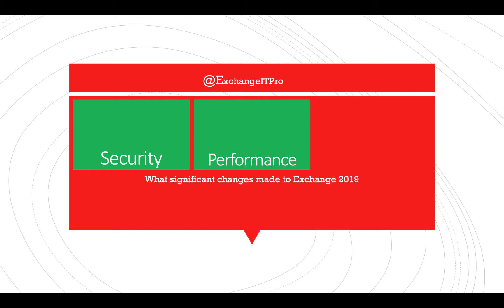Exchange 2019 also leverages Bing technology for search, offering much better search compared to previous versions. Database failover has been taken to the next level — your indexing now goes with the mailbox. Unlike previous versions where you had a separate index setup and if the server database went bad the indexing had to be rebuilt, now wherever your mailbox goes, the index goes with it.